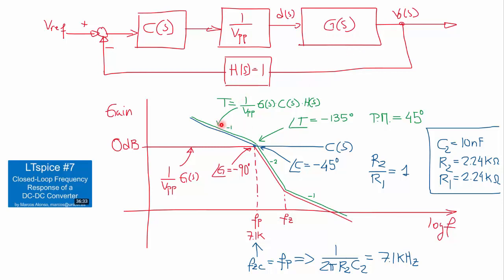Then in the video we presented the block diagram, the small signal block diagram of the converter operating in closed loop with the compensator, the response of the PWM modulator, the response of the converter, the sensor and so on. From this we explained how to do the design of the compensator. In blue is the response of the compensator, and in green we have the response of the loop gain of the converter in closed loop, which is the product of all the blocks in the loop. The response crosses 0 dB at approximately 7.1 kHz, which is the bandwidth of our converter.